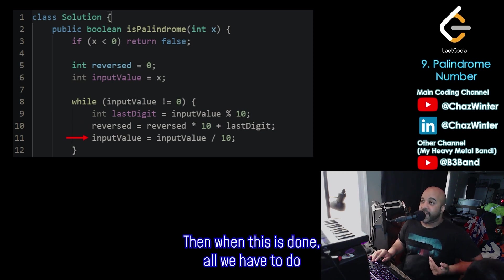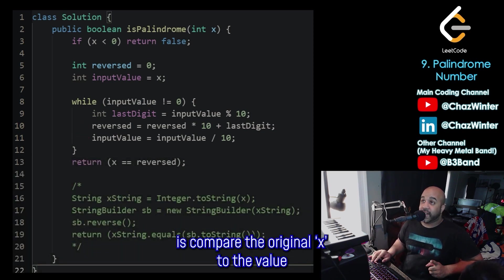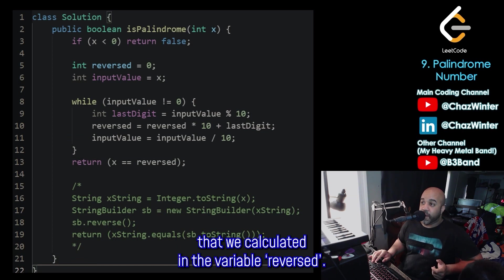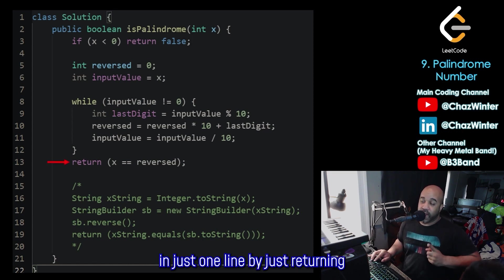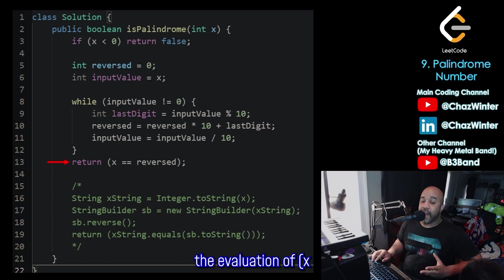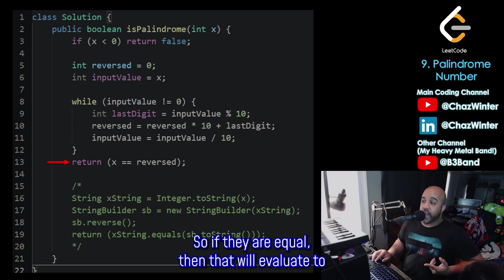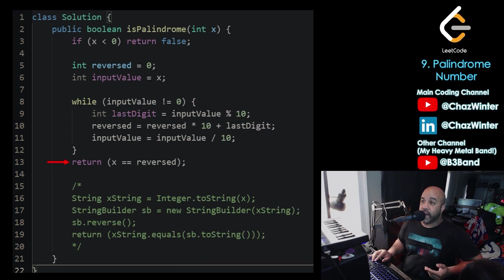And then when this is done, all we have to do is compare the original x to the value that we calculated in the variable reversed. And so essentially, what we're saying is, if x is equal to reversed, return true. And if x is not equal to reversed, return false. And of course, I can do that in just one line by just returning the evaluation of x equal to reversed. So if they are equal, then that will evaluate to true, and I'm returning true. And if they're not equal, that evaluates to false, and I'm returning false.